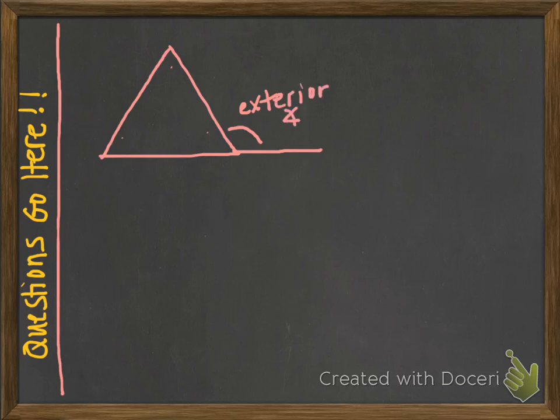There's a relationship between an exterior angle and its remote interior angles. Remote is a word that means far away. If I look at the three interior angles, there are two remote interior angles, and these are considered remote because they are not directly adjacent to that exterior angle. I'm going to label these angles: angle one, angle two, and angle three.